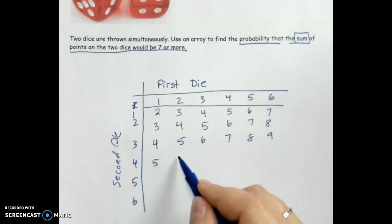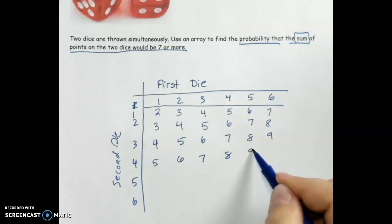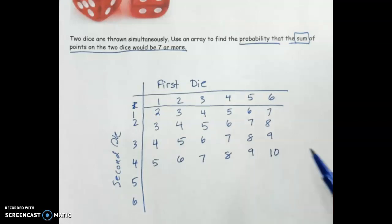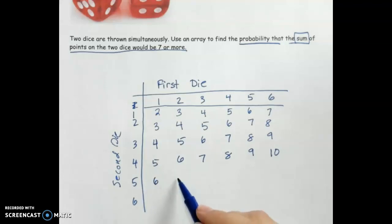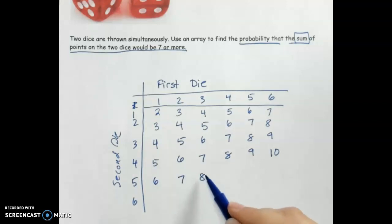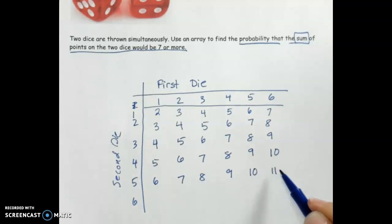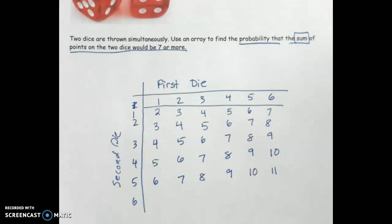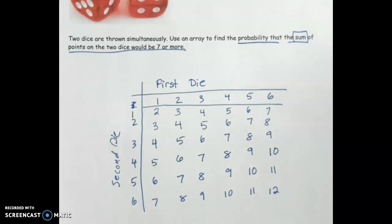Four plus one gives us five, then six, seven, eight, nine, and four plus six is ten. When I roll a five and a one, I get a sum of six, then seven, eight, nine, ten, and five plus six is eleven. Six plus one gives us seven, then eight, nine, ten, eleven, and six plus six is twelve.